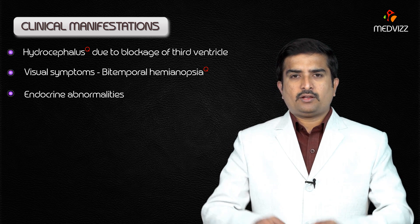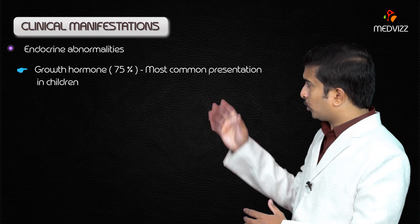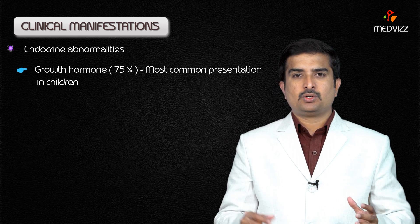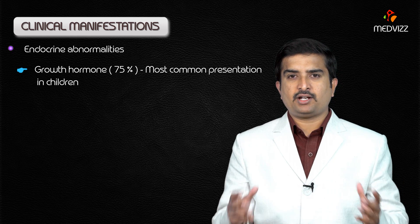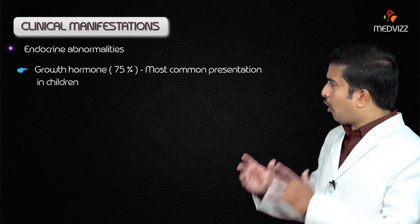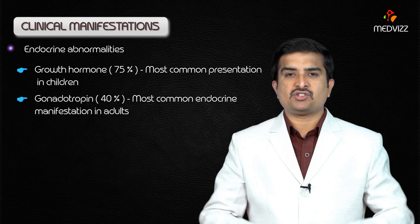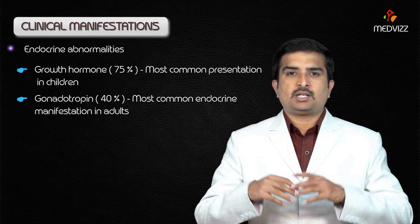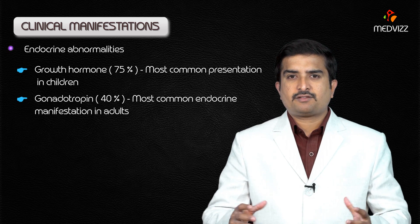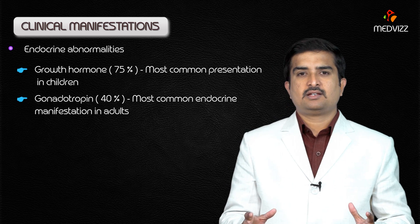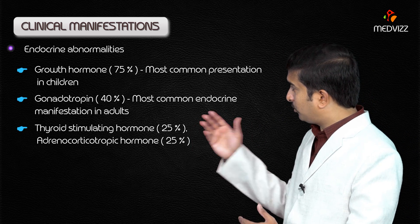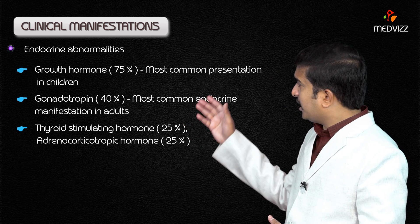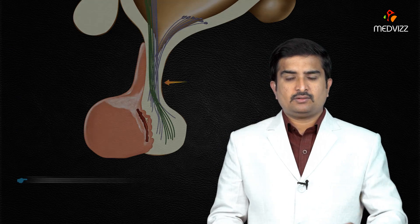Endocrine abnormalities in craniopharyngioma include: growth hormone deficiency in approximately 75 percent of patients, leading to growth failure — the most common presentation in children. Gonadotropin deficiency is seen in approximately 40 percent of cases; sexual dysfunction is the most common endocrine manifestation in adults. Thyroid stimulating hormone deficiency may be seen in 25 percent of cases, and adrenocorticotrophic hormone deficiency is also seen in 25 percent of cases.